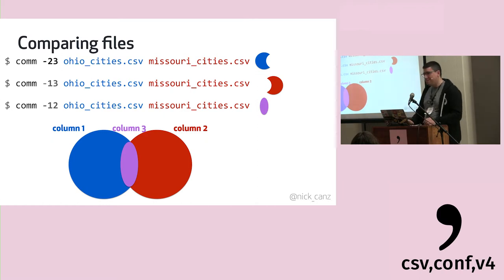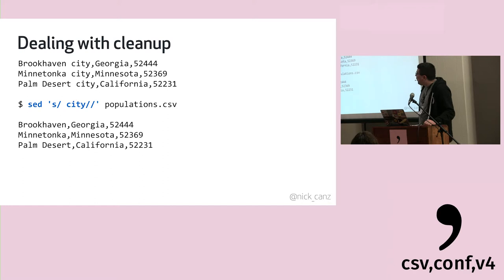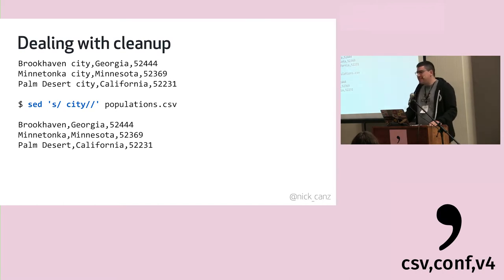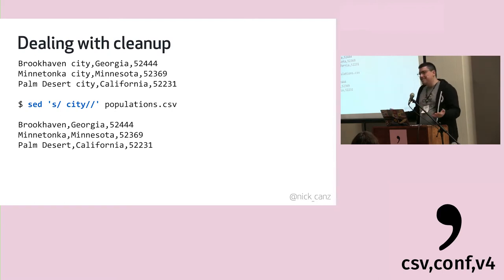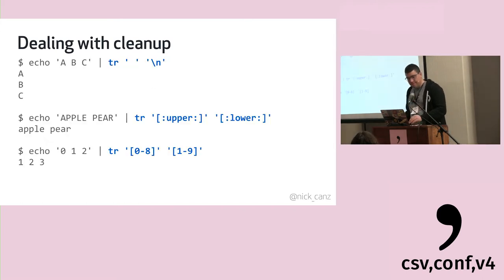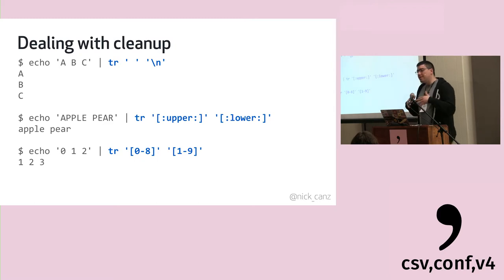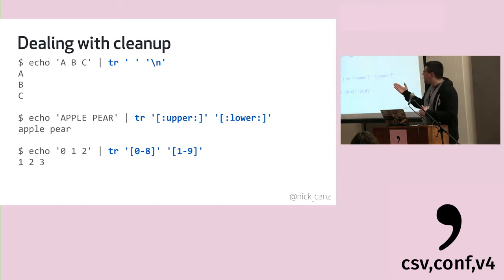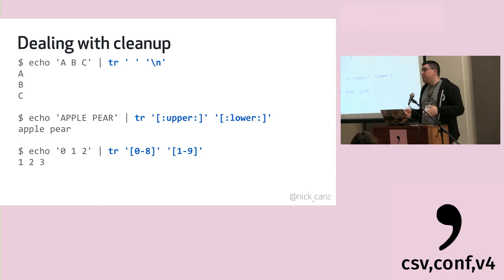We don't always get data in the format we want, so we'll need to do some cleanup. 'sed' is great for simple search-and-replace operations. In our file, 'city' is repeated many times — we can search for ' city' and replace it with nothing. 'tr' stands for translate — you're translating one character set to another. For example, translating spaces to newline characters splits a long row of items into separate lines.